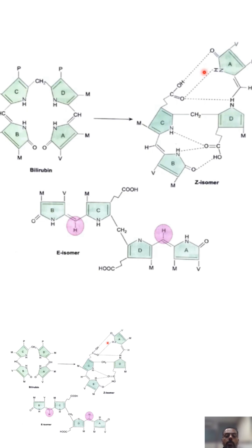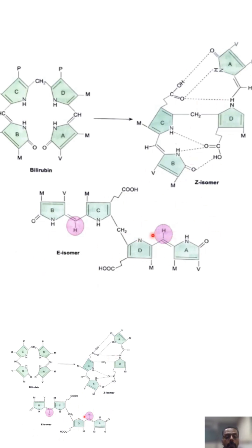With the help of phototherapy, this Z isomer is converted into the E isomer. In the E isomer, there is no intramolecular bonding, so the water insoluble form is converted into the water soluble and excretable form. This E isomer is also known as Lumirubin.